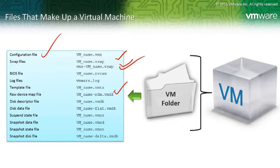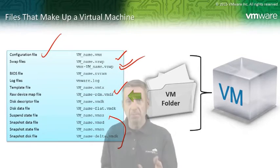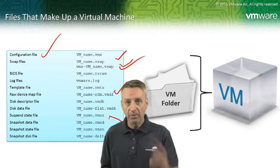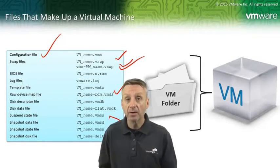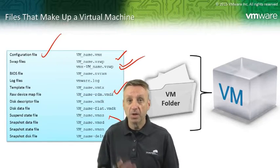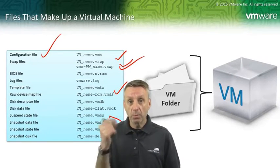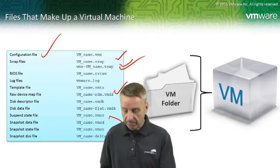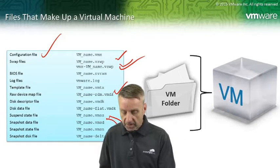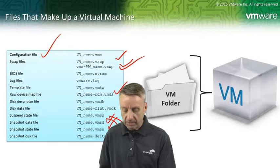Depending on whether you've created snapshots for your virtual machine, certain files may or may not be present. A snapshot gives you the ability to revert back to a previous state — we'll talk more about snapshots shortly. If you haven't taken snapshots, those files won't be there. Similarly, the suspend state file is only present if you've suspended the virtual machine.